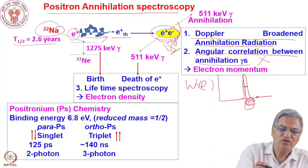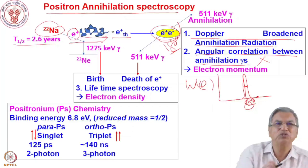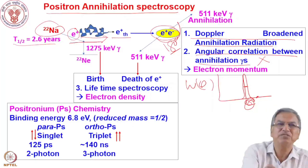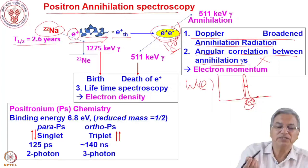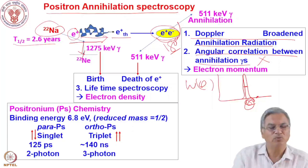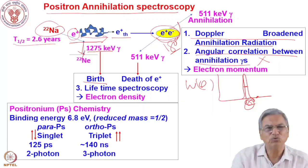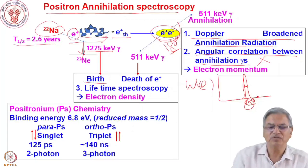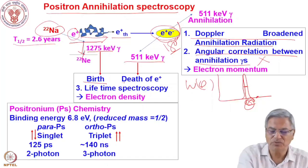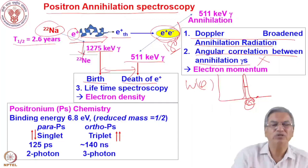The third technique: when sodium-22 decays by β⁺ (positron emission) to the excited state of neon-22, this 1275 keV gamma is emitted almost instantaneously in less than a picosecond. So the 1275 keV gamma ray tells you the time when the positron was born. Subsequently the positron thermalizes, interacts with an electron, and annihilates to give a 511 keV gamma ray — that tells you the death of the positron. The time difference between these two gamma rays is called the lifetime of the positron.